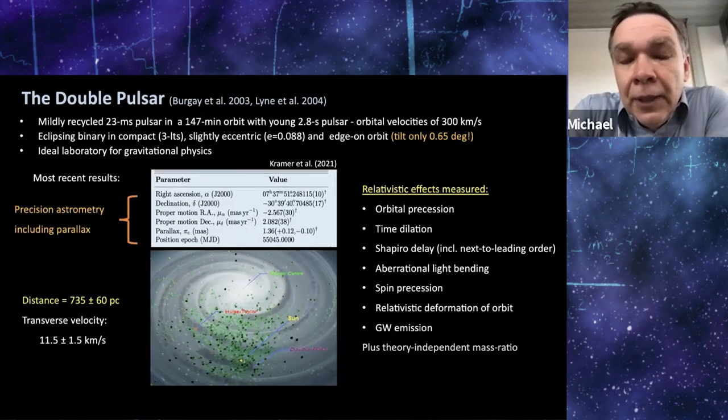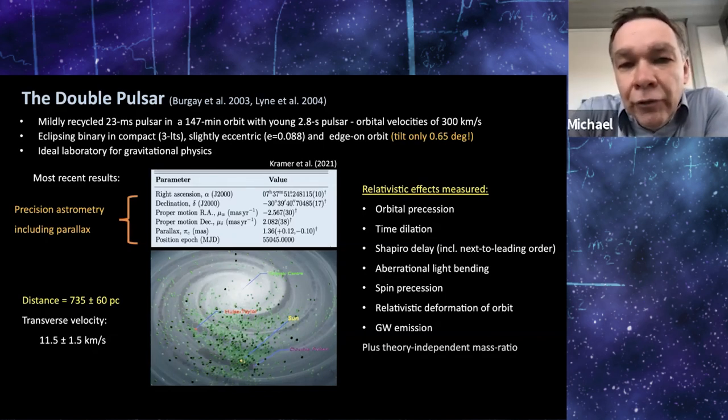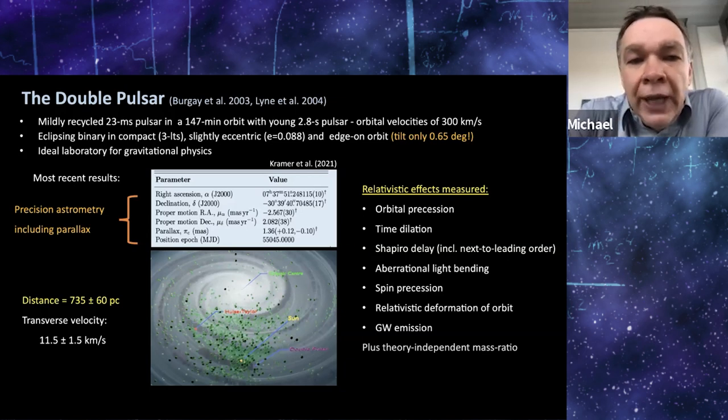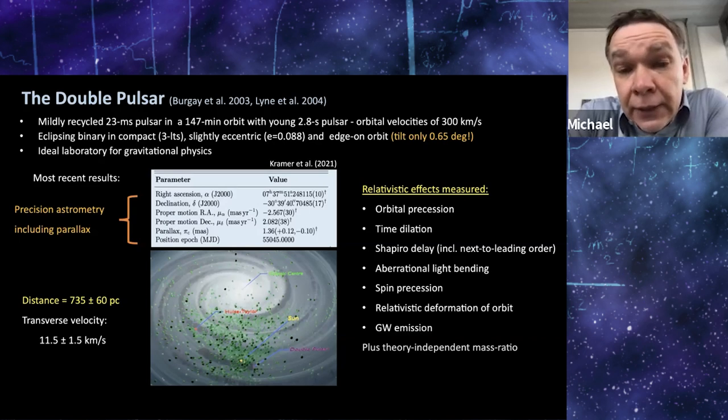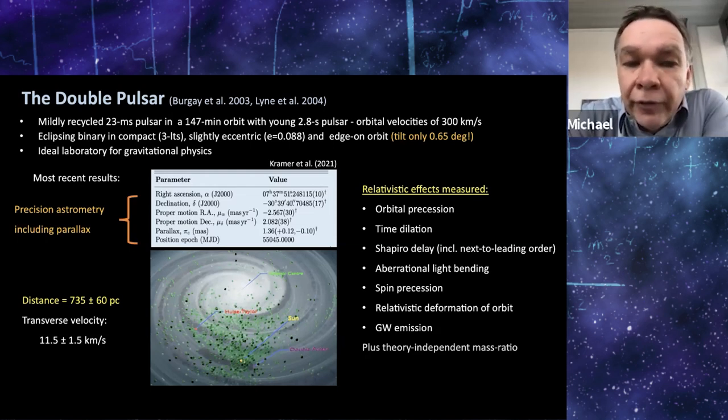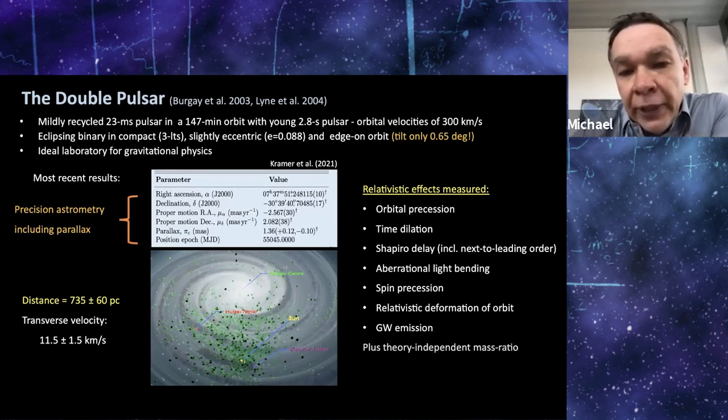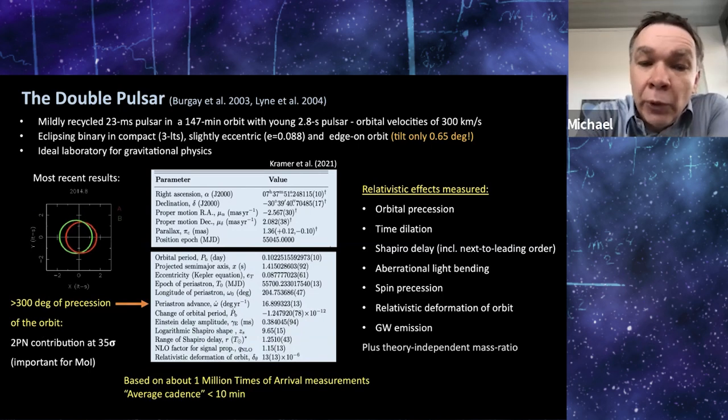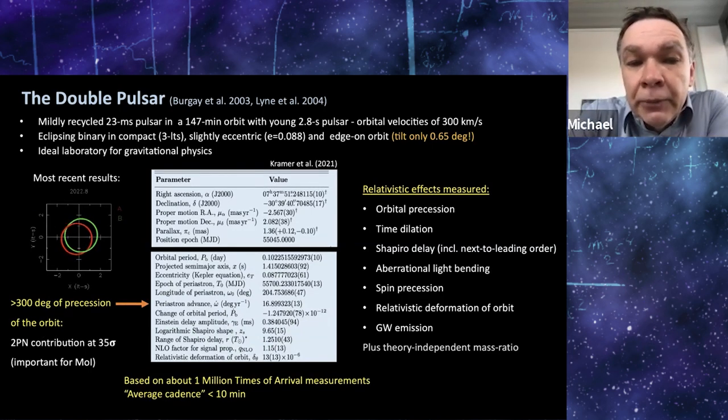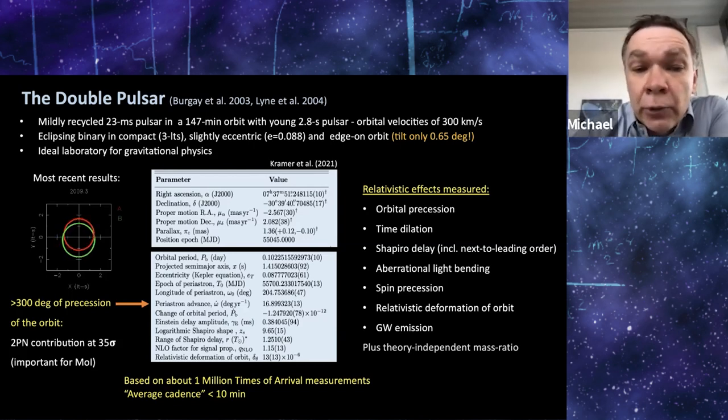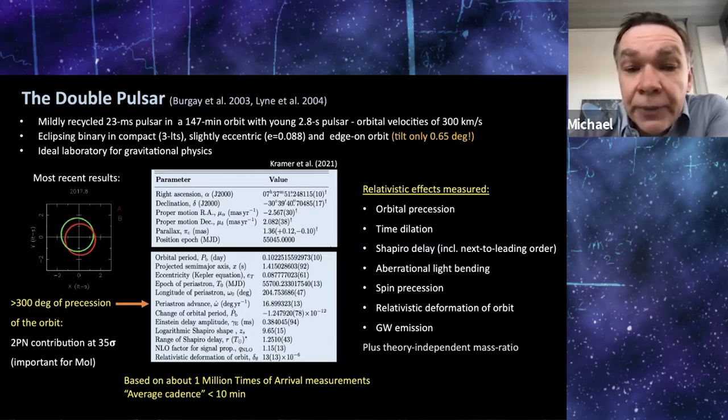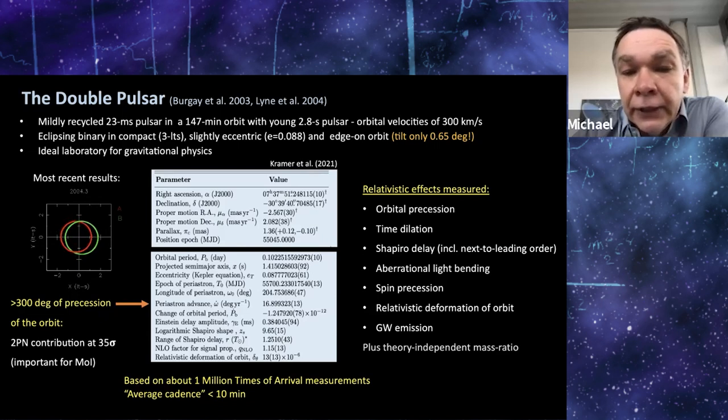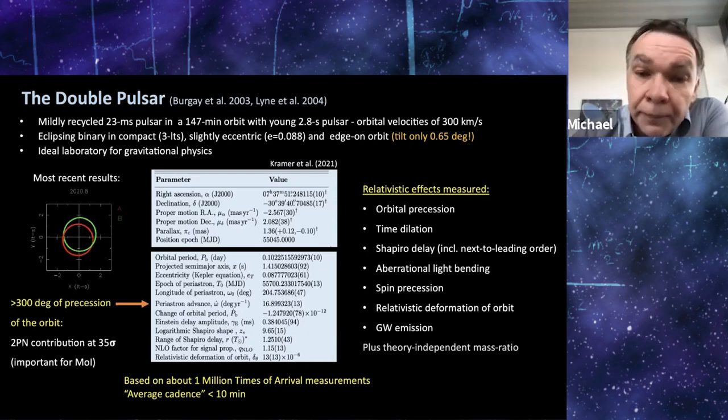We have now, as I said, put out a publication, or it's about to be published, of all observations since we discovered the pulsar. We have precision astrometry, including a parallax enhanced distance measurement, which is, as you've seen for the Hulse-Taylor pulsar, is very important. And so we determined the distance to 735 plus minus 60 parsec, which is pretty good. And the transverse velocity is also very small. It essentially stands still where it was born. At the moment, we have about 1 million TOAs, times of arrival measurements. And we measure the post-Keplerian parameters very precisely. The most precise post-Keplerian parameter is actually the periastron advance. And we have measured at a level which is exceeding the expected 2PN contribution by 35 sigma. And that will become important, as you will see, when we try to measure the moment of inertia of the neutron star.